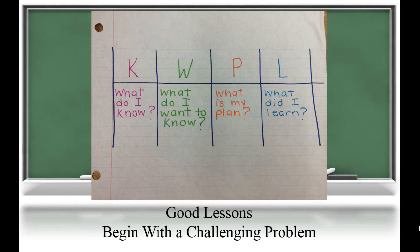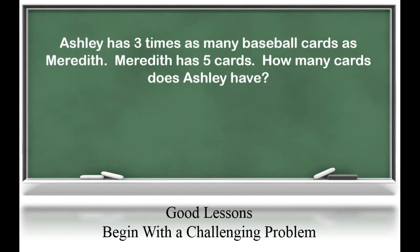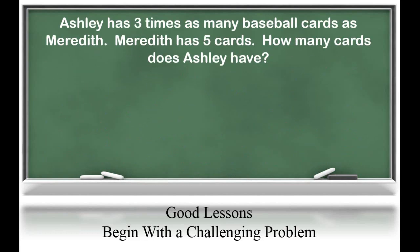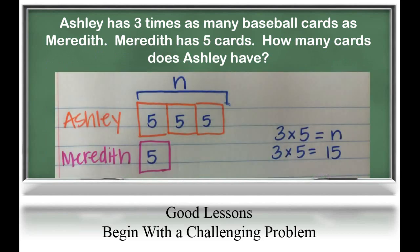Let's look at what some of these problems could look like. Ashley has three times as many baseball cards as Meredith. Meredith has five cards. How many cards does Ashley have? Let's look at what a model for this problem might look like. What we know from the problem is that Ashley has three times as many baseball cards as Meredith, so if Meredith has one group of cards, Ashley would have three groups of cards.